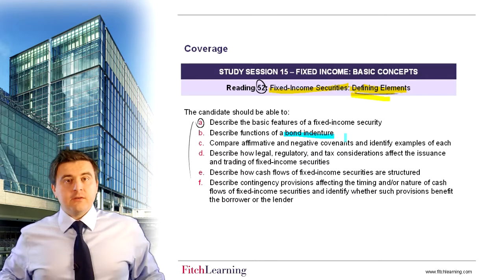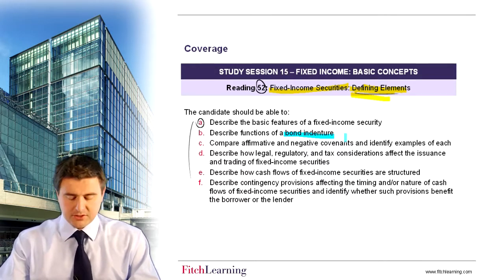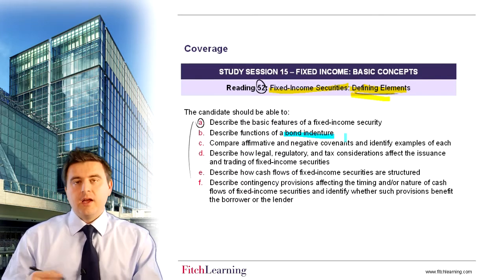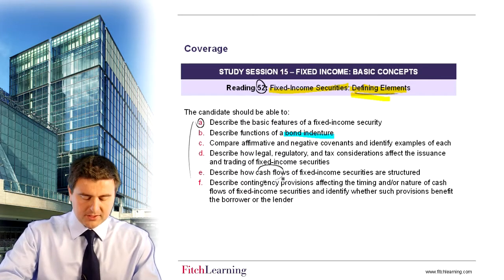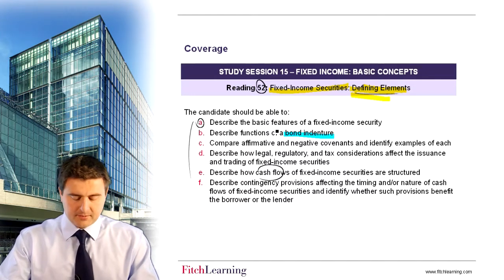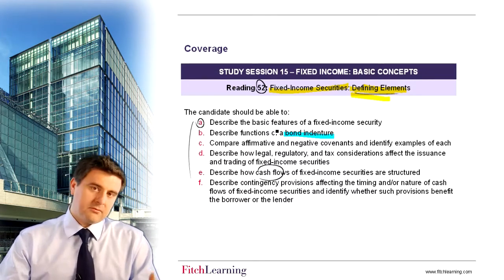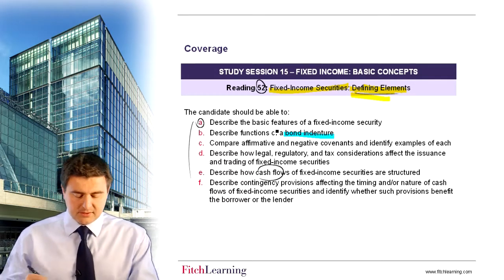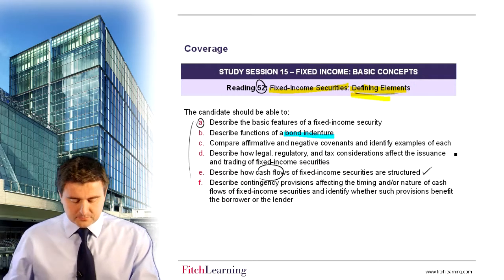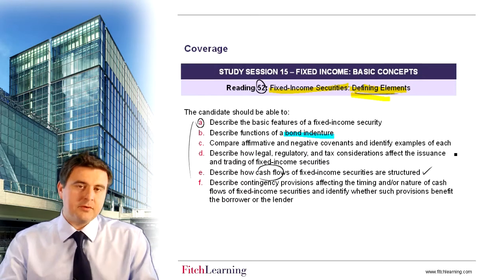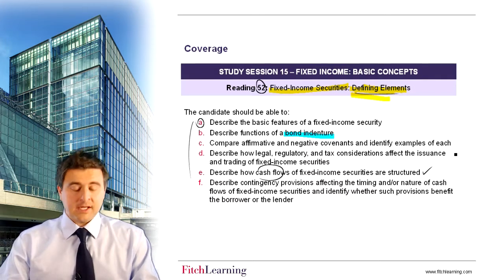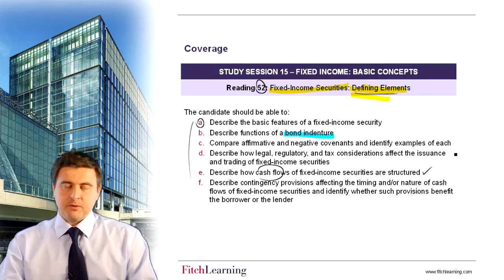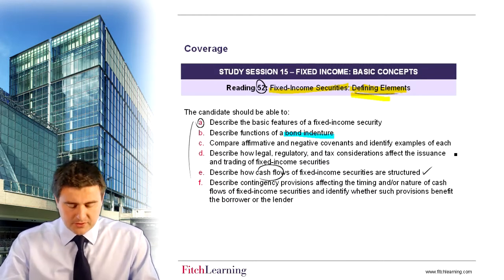We then talk about some of the legal and regulatory restrictions, including some of the tax considerations that you should take into account when looking to invest into bonds. And then also deciding how the coupon — which is the cash flow structure of a fixed income security — along with its principal, which is the repayment at the maturity of the bond, are structured, because there are different types of bond in existence. The last bit is to describe some of the contingency provisions that might be contained within a bond. So we'll talk about callable bonds, putable bonds, convertible bonds, and the concepts of warrants to finish off.